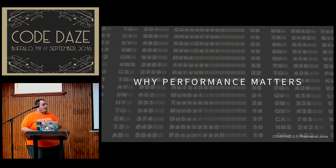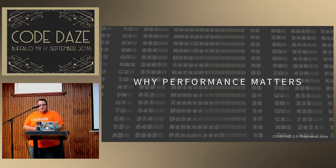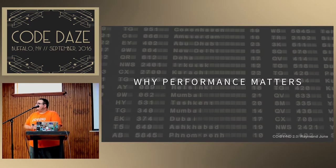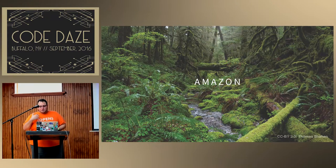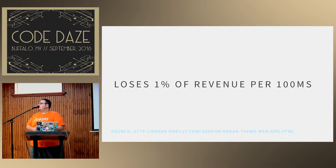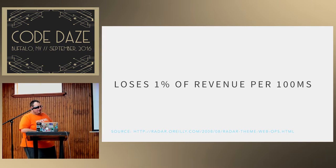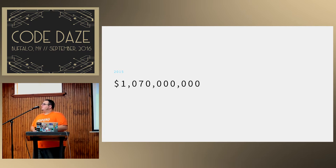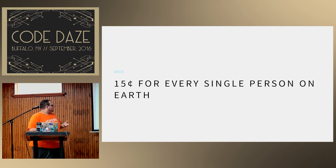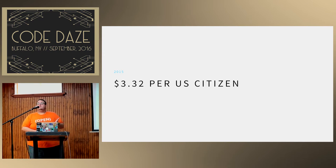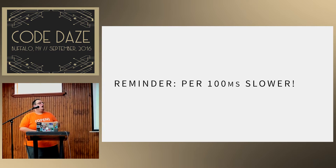So first of all, why does performance matter? There have been a number of studies about this. One of the most important ones is Amazon — Amazon loses 1% of their annual revenue per 100 milliseconds their site is slower. What that means is for 2015 they would have lost a billion dollars. To put that into perspective, that's 15 cents for every single person on our planet, or $3.32 per U.S. citizen — and that's per 100 milliseconds.